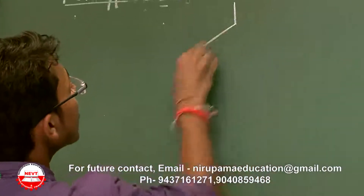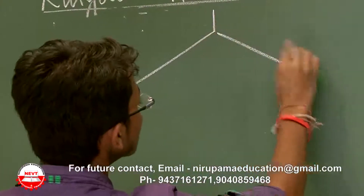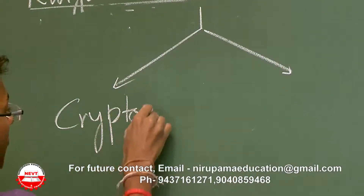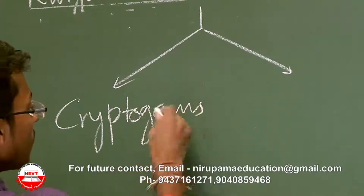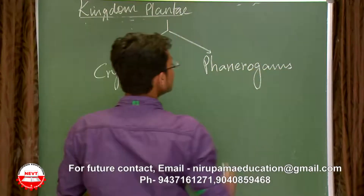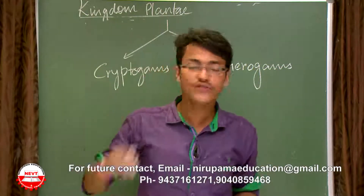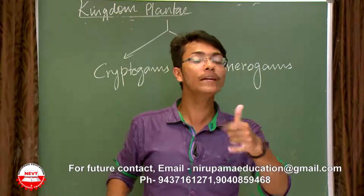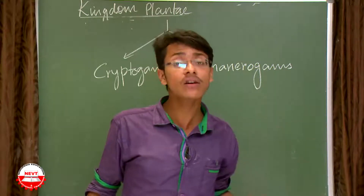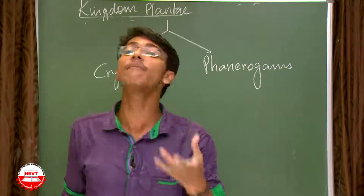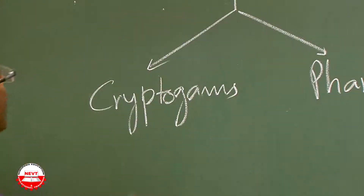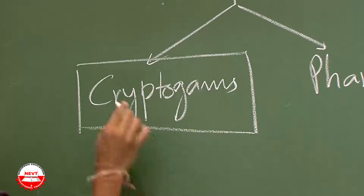The last topic is cryptogams and phanerogams — the two categories of the plant kingdom. The first three divisions — thallophyta, bryophyta, and pteridophyta — have no seeds and no proper sex organs. Their sex organs are simple and single-celled, so they come under the category of cryptogams.